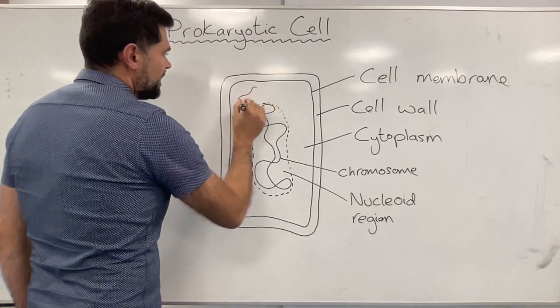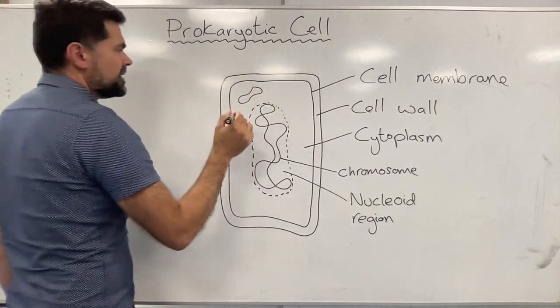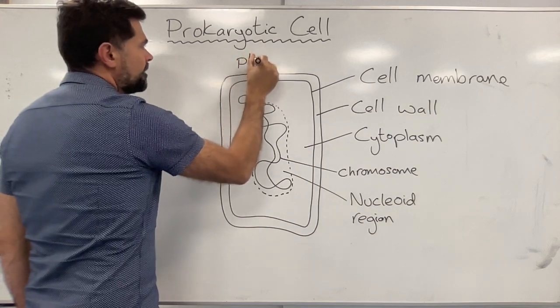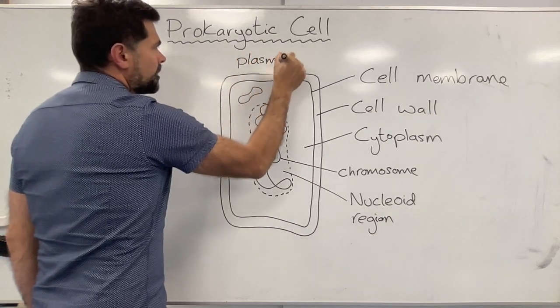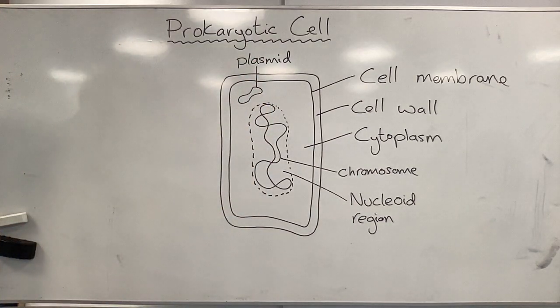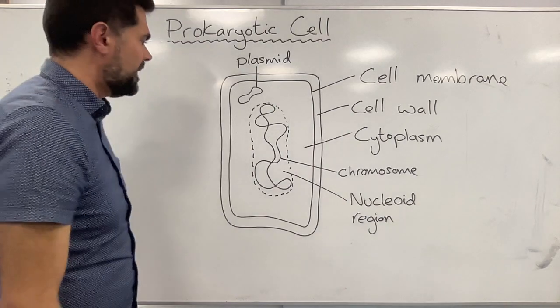That's not the only DNA. There might be other DNA, like little chromosomes like this also in a loop shape, and these are called plasmids. I'm just going to draw one. Not all prokaryotic cells have plasmids. Some might have one, some might have many.